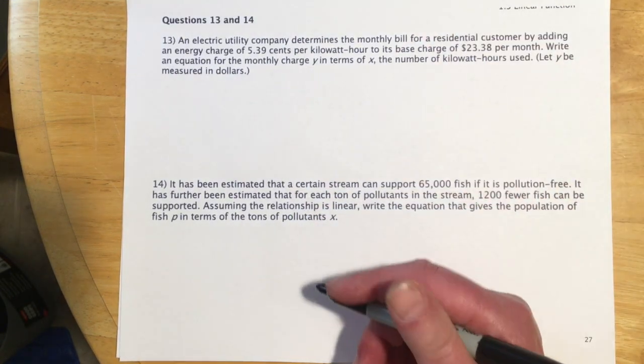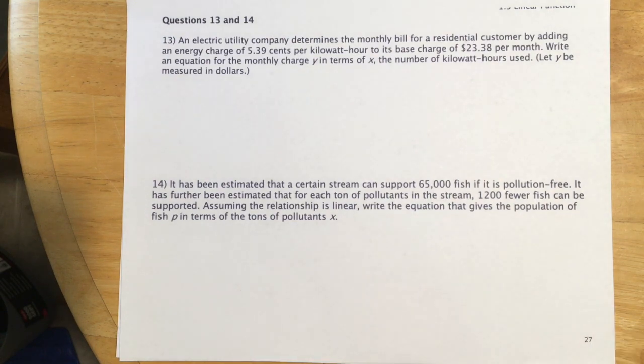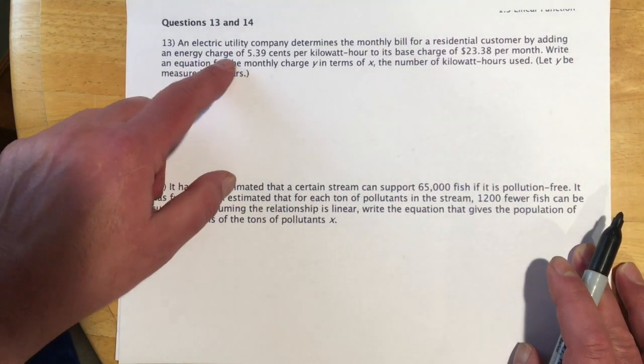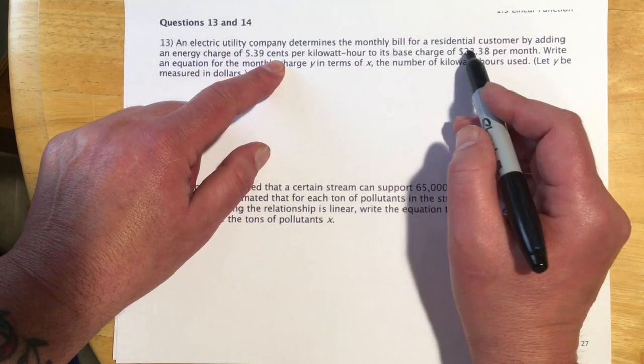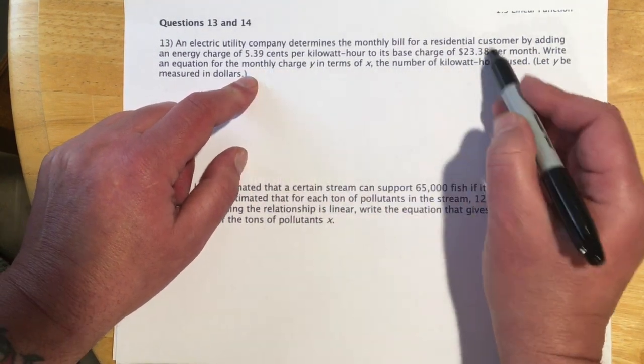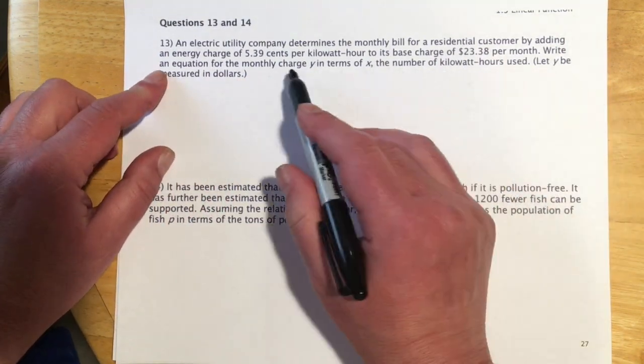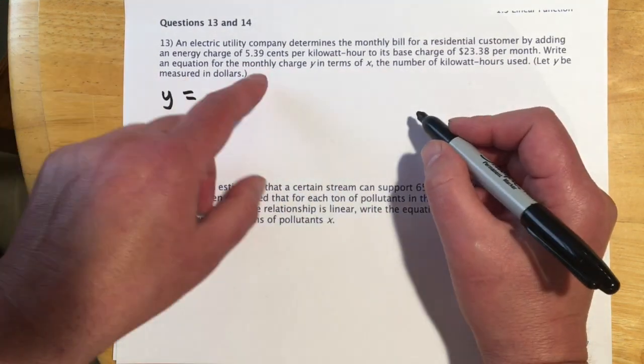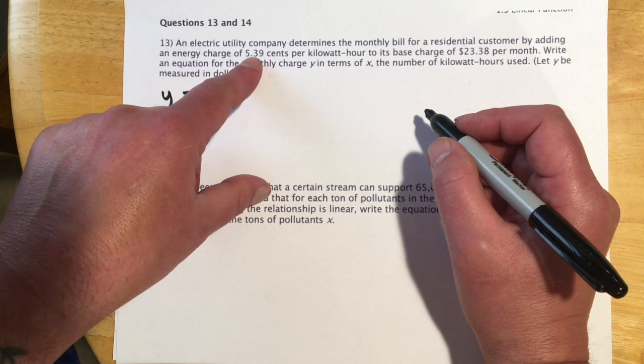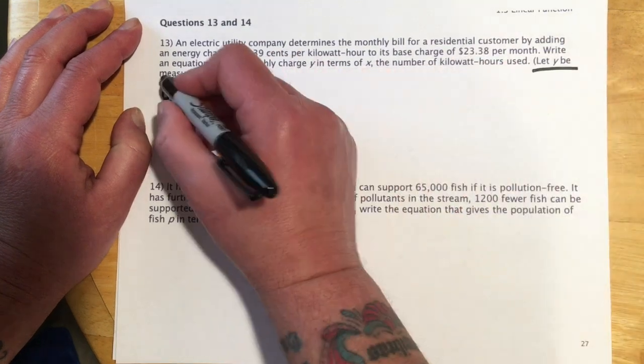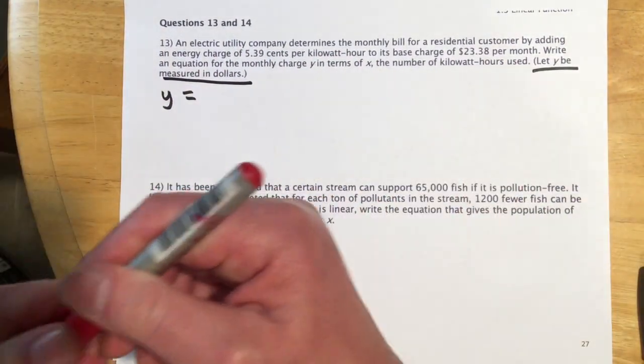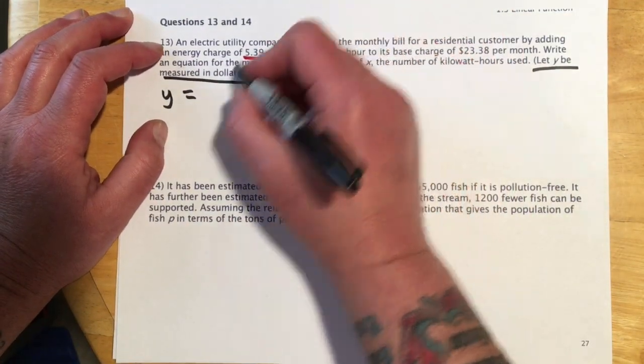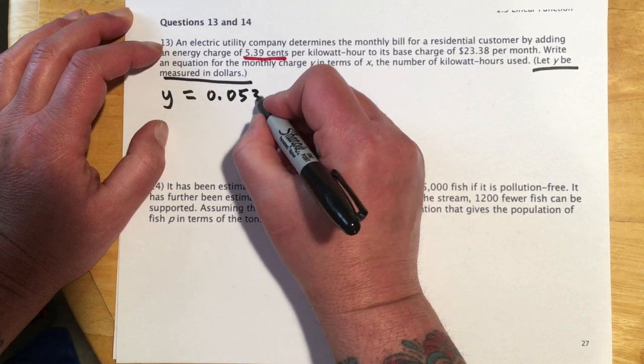These last couple look like they're going to be terrible, but then they're really not. It's basically just trying to identify that idea of slope and y-intercept from word problems. So an electric utility company determines that the monthly bill for a residential customer by an energy charge of 5.39 cents per kilowatt hour to its base charge of $23.38. So it's adding this for every kilowatt hour. And then just to be hooked up, you have to pay them $23.38. Write an equation for the monthly charge y in terms of x. And then where x is the kilowatt hours used. So y equals, for every kilowatt hour we use, we're going to have 5.39 cents. And let y be measured in dollars. We've got to be a little bit careful right there. And that's because this is cents. So if it's basically 5 and a little bit of a third of a cent. In decimal, that's going to be 0.0539. So that would be 5 cents in terms of dollars.